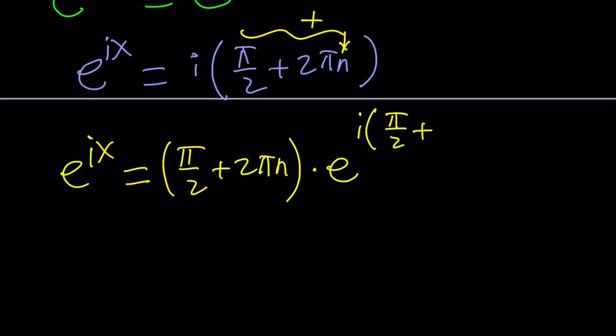The modulus is going to be π over 2 plus 2πn multiplied by e to the power i times π over 2. But again, I can add multiples of 2π, but this time I'm going to use a different integer because n and k, these two integers are not dependent. They can be different, okay?